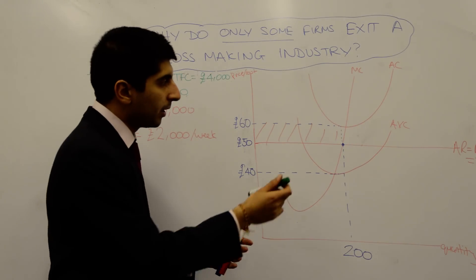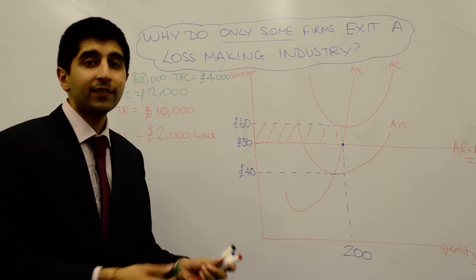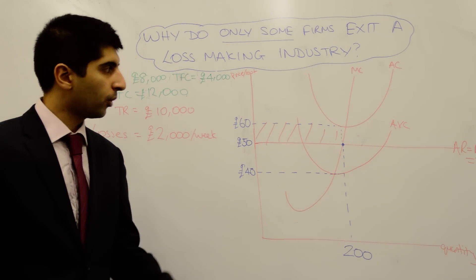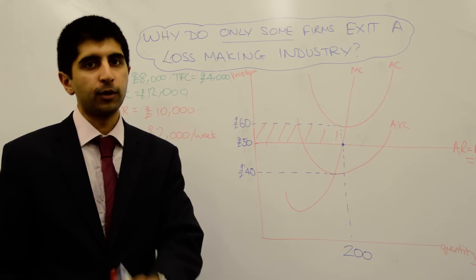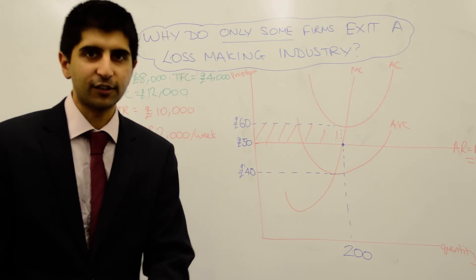Any production point below average variable costs is the shutdown point. The shutdown point occurs when you can't even cover your variable costs. Hope that makes sense — see you next time.